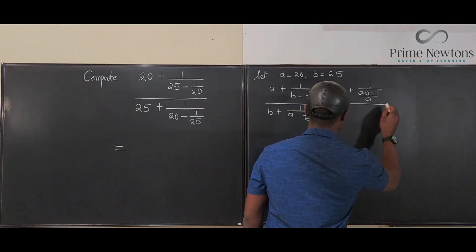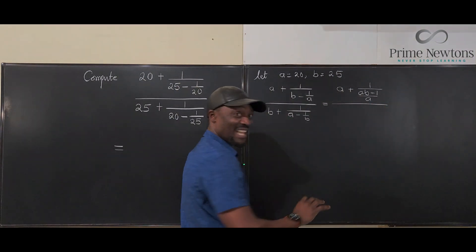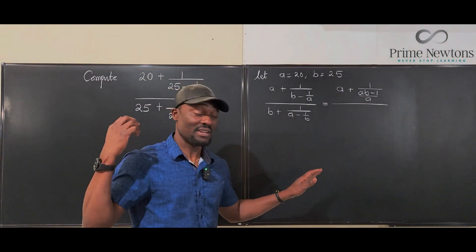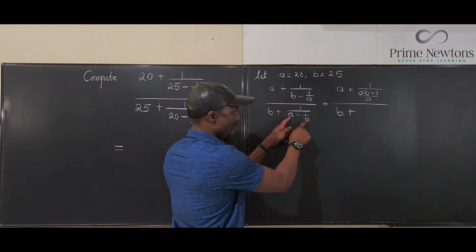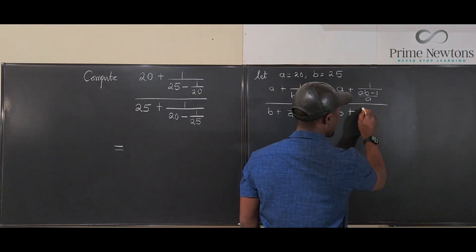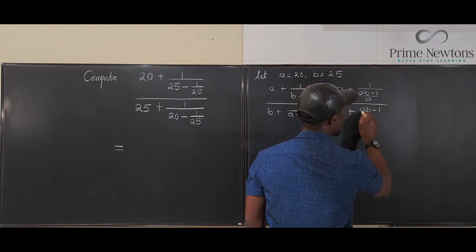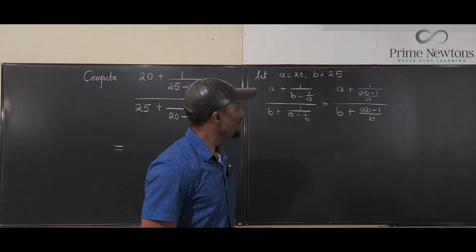Divided by, if you resolve this, it's going to be the same exact thing. That's the beauty of you not plugging in the numbers because this is going to be B plus AB minus 1 over B.